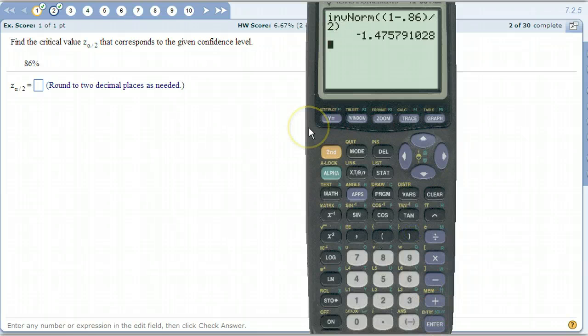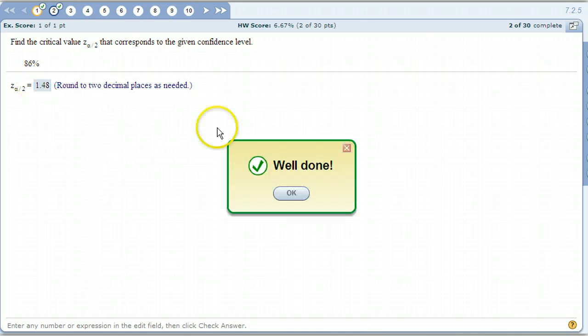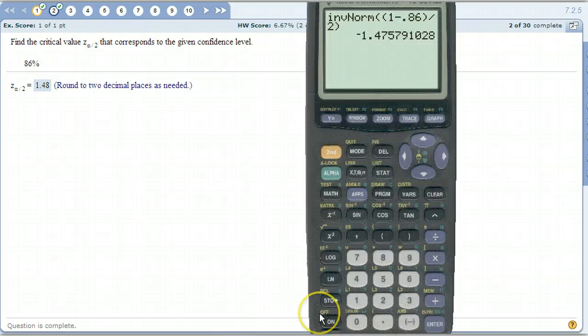Hit enter. Boom. There's your number. That was negative, but again, change it to a positive. Careful with your rounding. Make sure you round it correctly.